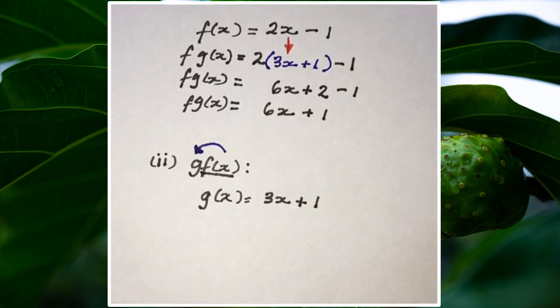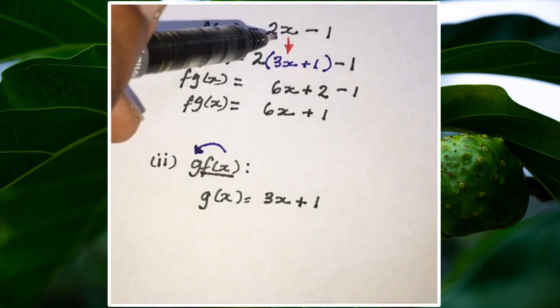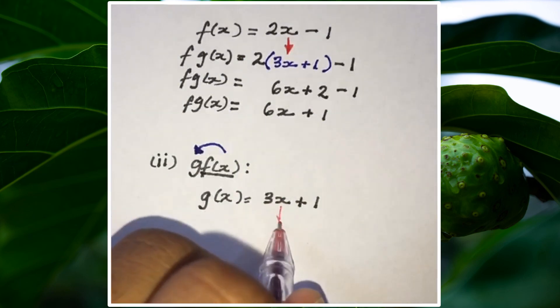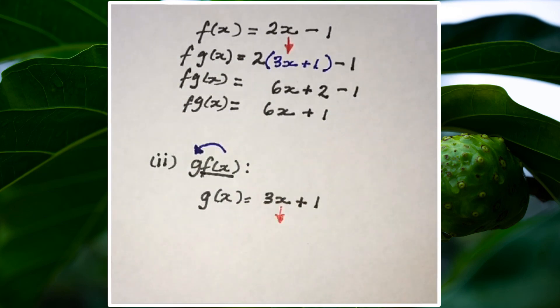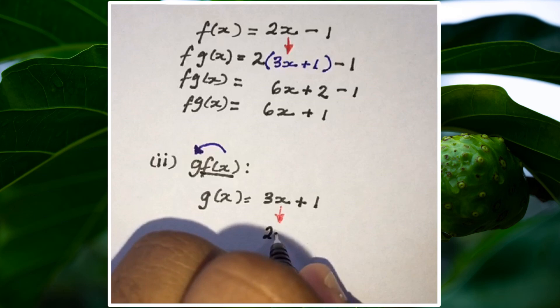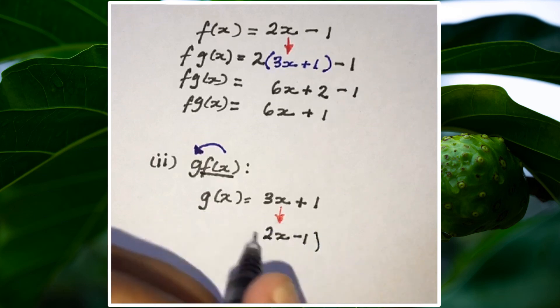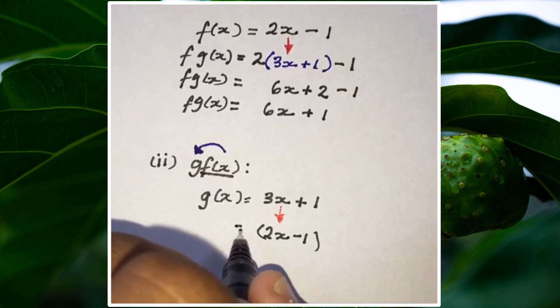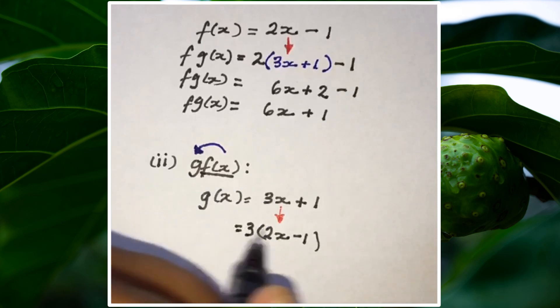Let's look back at f(x). f(x) was 2x - 1. So where I see x, I'm going to input the function 2x - 1. Because I'm substituting, I will be using brackets. Everything around it I'm going to put back.